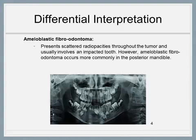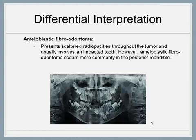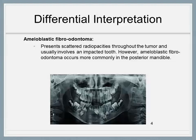An ameloblastic fibroodontoma should also be considered a differential for AOT due to the scattered radiopacities seen throughout the tumor and the involvement of an impacted tooth. However, an ameloblastic fibroodontoma occurs more commonly in the posterior mandible, while an adenomatoid odontogenic tumor occurs two-thirds of the time in the anterior maxilla. It should be noted that the foregoing differentials were listed in order of likelihood.